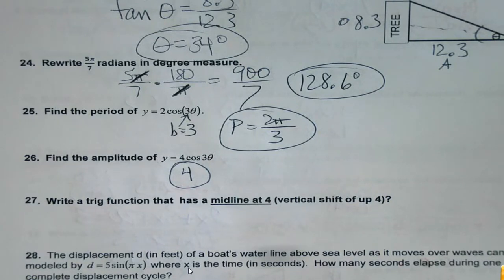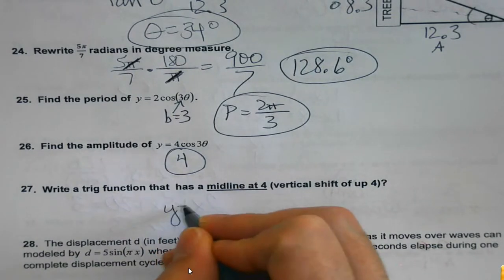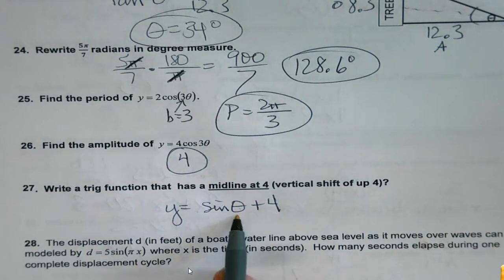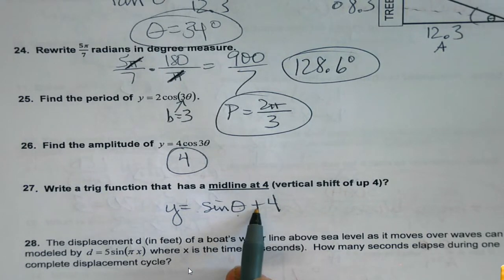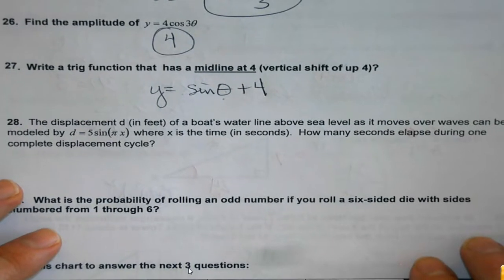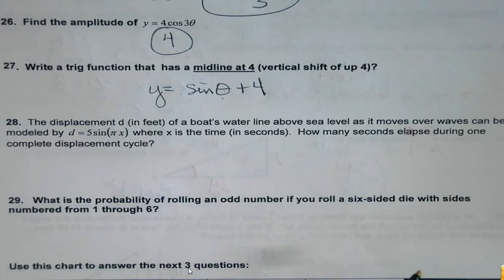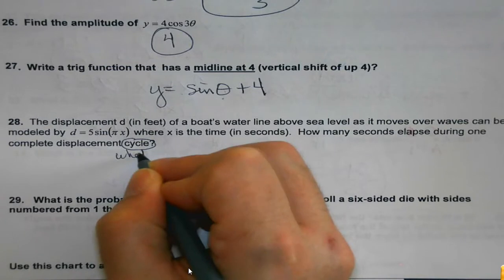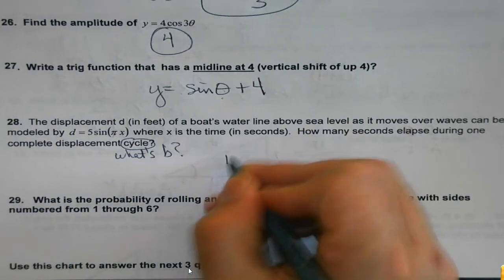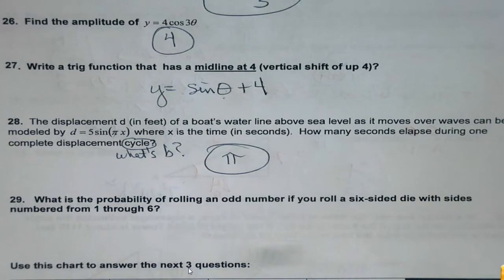To write a trig function with a midline at 4, don't make it hard — put sine or cosine, put an amplitude, and just put a plus 4 at the end. If it said down, you'd put minus instead. For the displacement cycle problem: all they're really asking is what B is. Whatever your B value is, that's the answer — nothing to calculate. It's just a fancy application way to ask you to find B. It's all about the word cycle.